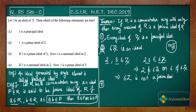We know that if we have a commutative ring with unity, then every maximal ideal of R is a prime ideal. This third statement is the reverse of that. We cannot directly use it here, so let us examine the third statement more carefully.